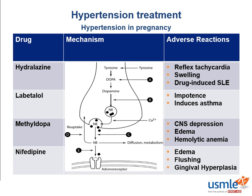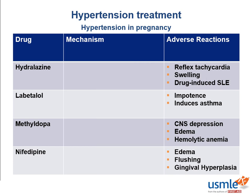Moving on to methyldopa: remember that methyldopa can bind to the alpha-2 receptors on the presynaptic terminal. This agonist activity will lead to a drop in the release of catecholamines, decreasing the amount of sympathetic nervous activity and therefore blood pressure. Finally, nifedipine — not surprisingly, like the other calcium channel blockers — treats hypertension by causing vasodilation.